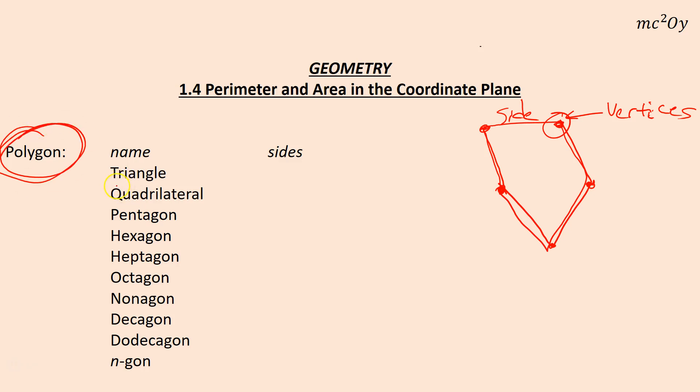When dealing with a polygon, it's a general name but we have more specific names. If a shape has three sides we call it a triangle, four sides quadrilateral, five a pentagon, six a hexagon, seven heptagon, eight octagon, nine nonagon, ten decagon.